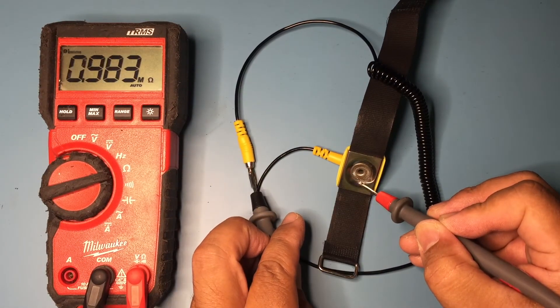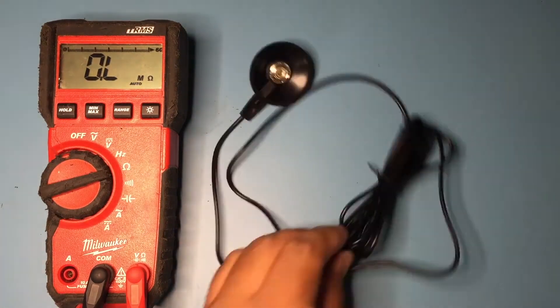For safety, both the wrist strap and mat cord have an inline 1 megaohm resistor.